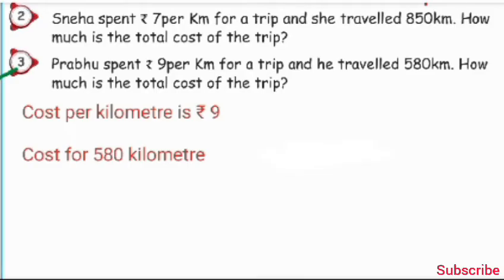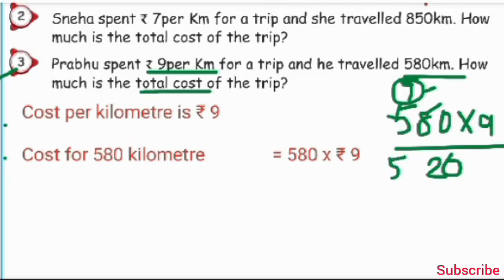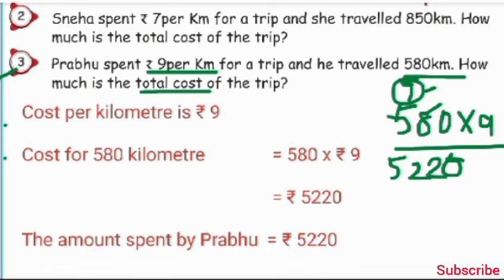Third sum: Prabhu spent Rs. 9 per km for a trip and he travelled 580 km. How much is the total cost of the trip? Prabhu travelled 580 km and spent Rs. 9 per km. Cost per km is Rs. 9. Cost of 580 km is equal to 580 multiply by 9: 9 times 0 is 0, 9 times 8 is 72, write 2, carry 7. 9 times 5 is 45, plus 7 is 52. The amount spent by Prabhu is equal to Rs. 5220.